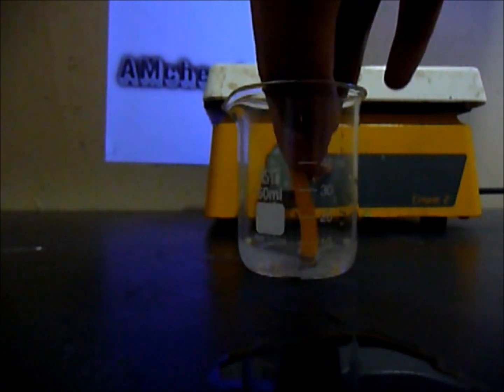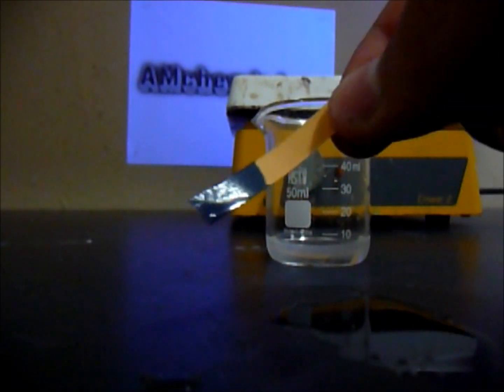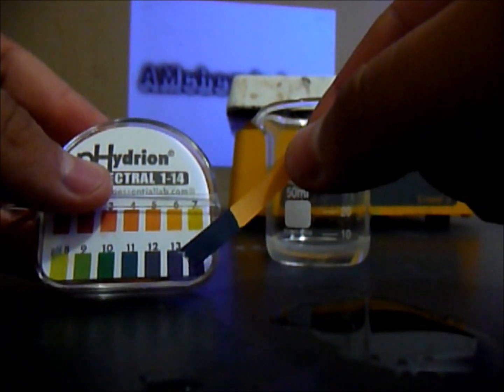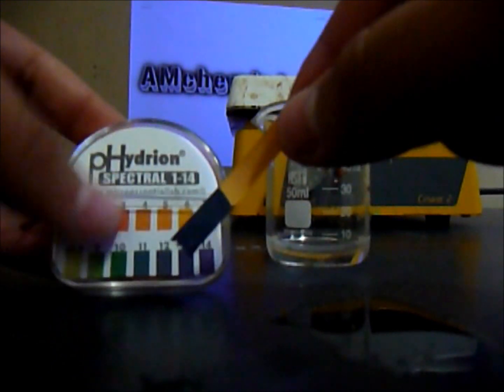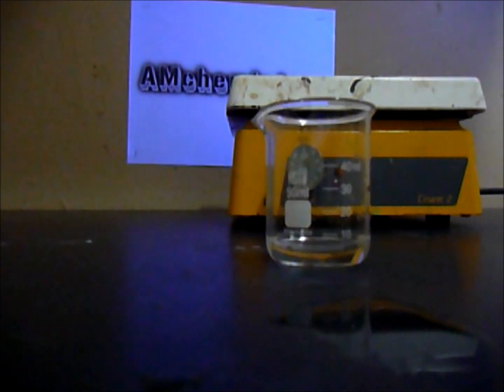Now that the sodium carbonate is in solution, just simply put a piece of pH paper. And you can see that it turned dark, which is around the high base area. So this is how you make sodium carbonate, just by heating sodium bicarbonate.